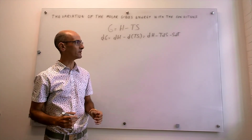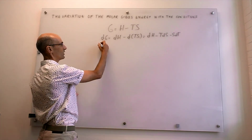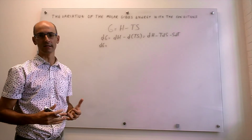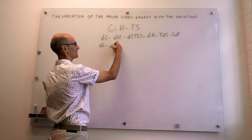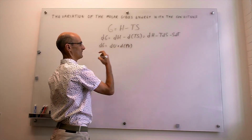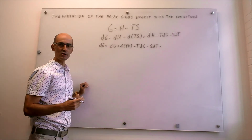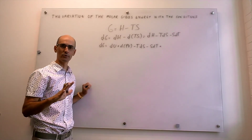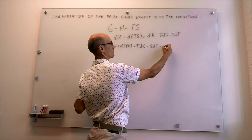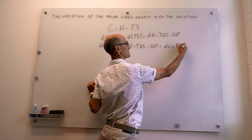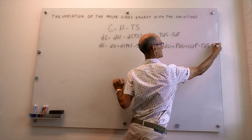To continue making progress, we look at the definition of enthalpy. From the first law, enthalpy is the internal energy plus the pressure-volume term. So we get dU plus d(PV), minus T·dS minus S·dT. Because these are total derivatives — we're not freezing the pressure or temperature — we must take the total derivative of PV using the product rule: dU + P·dV + V·dP − T·dS − S·dT.